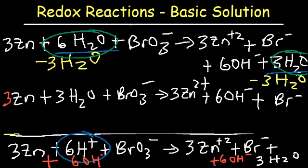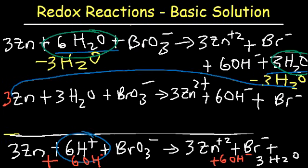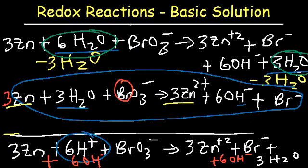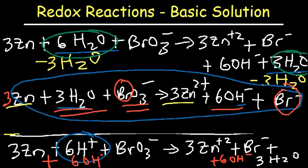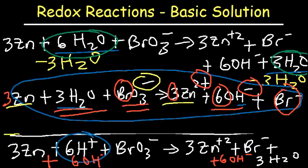That's how you balance a reaction under basic conditions. We have three zinc atoms on both sides, six hydrogen atoms, one bromine atom, and a total of six oxygen atoms — three in bromate and three in water. All atoms are balanced. The net charge on the left side is -1, and on the right side, 3×(+2) = +6, and 6×(-1) = -6, giving zero, plus -1 from bromide equals -1. The net charge is -1 on both sides, so the reaction is balanced.